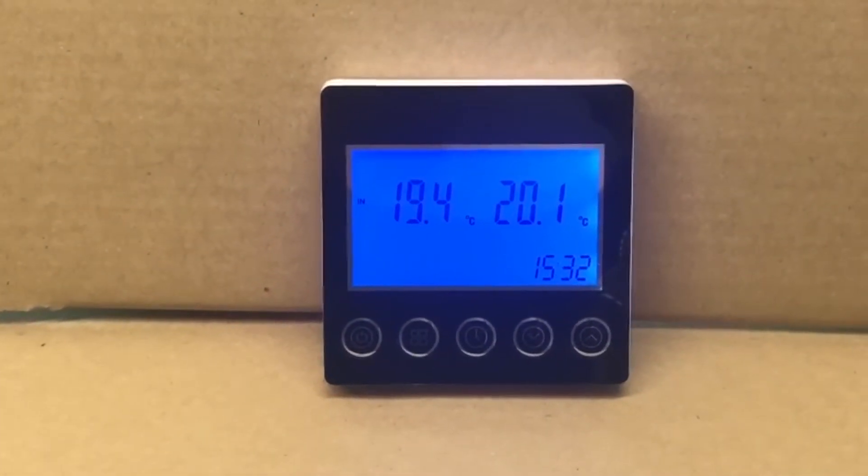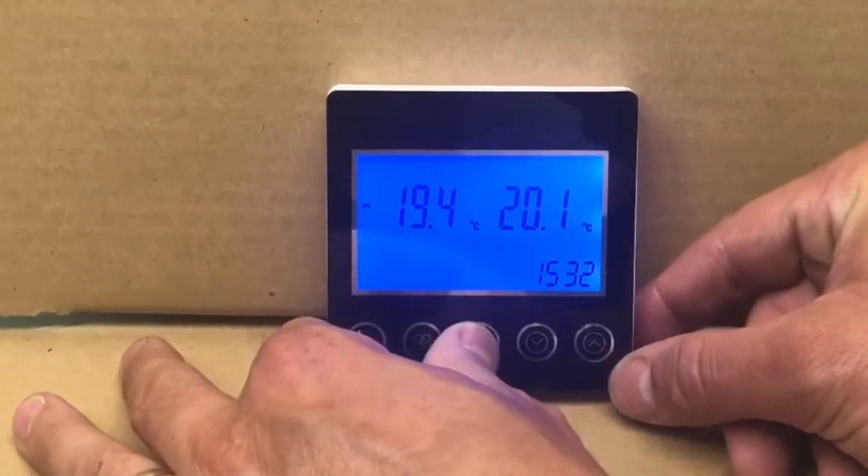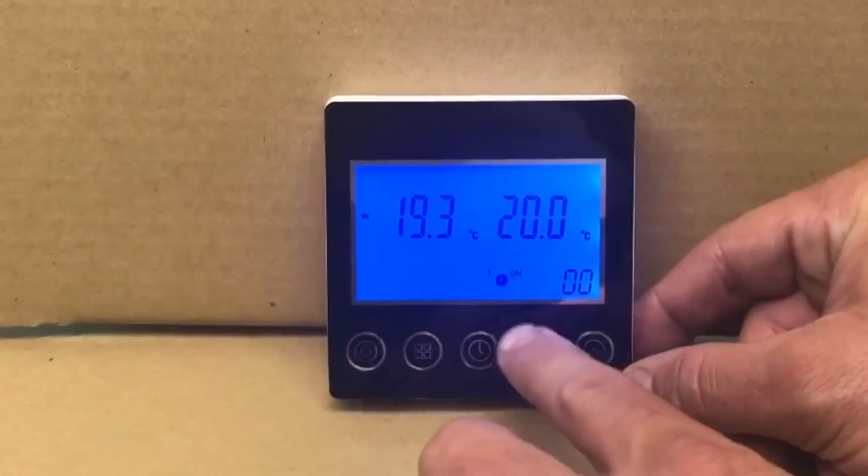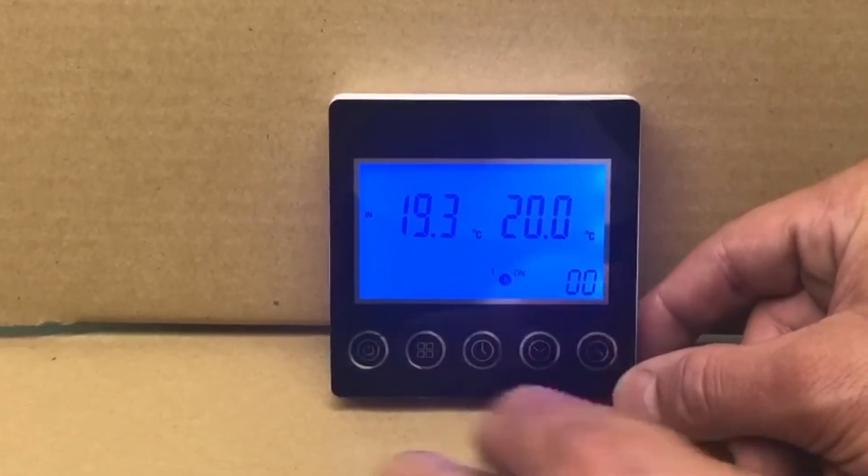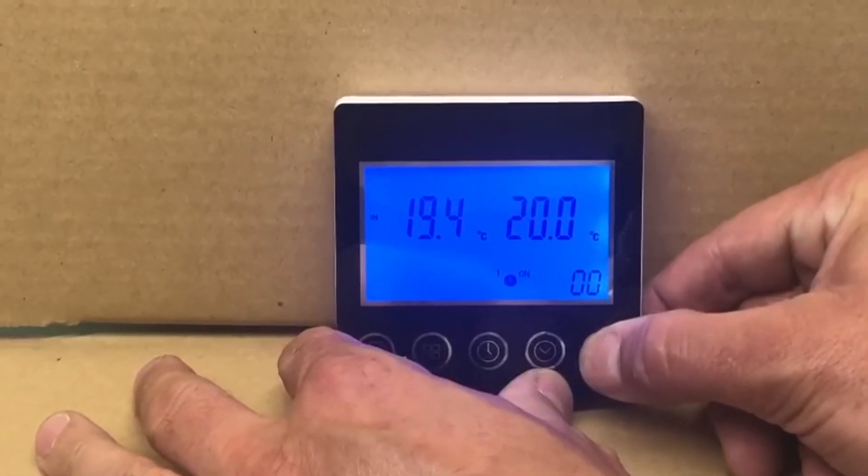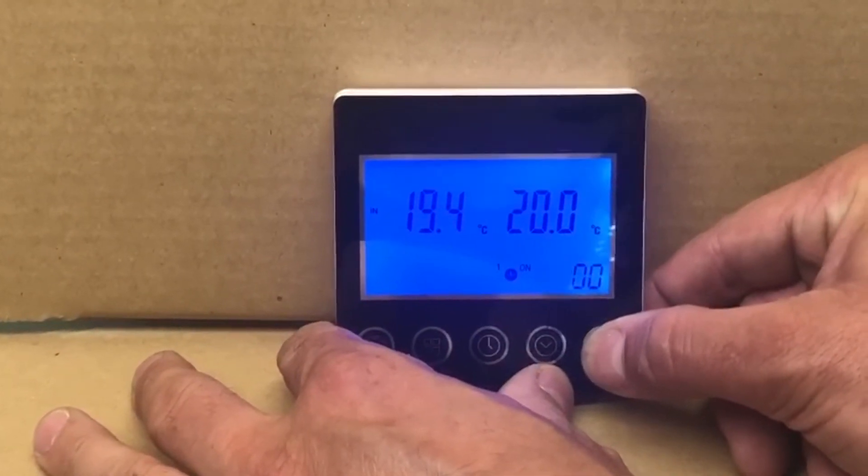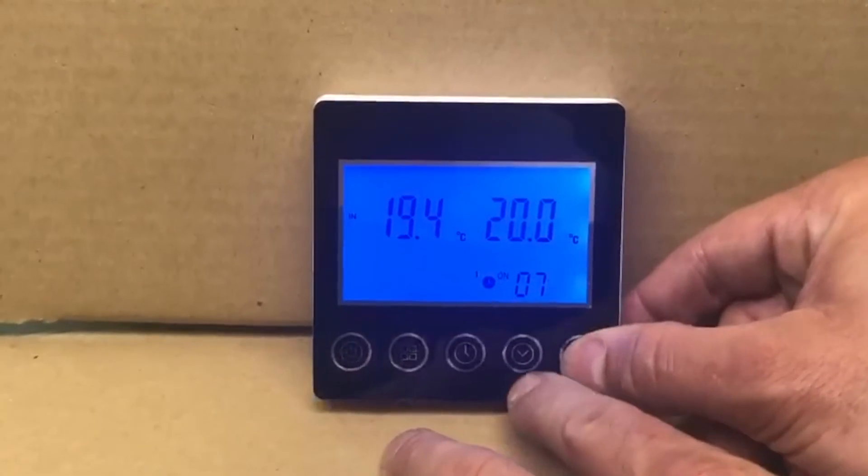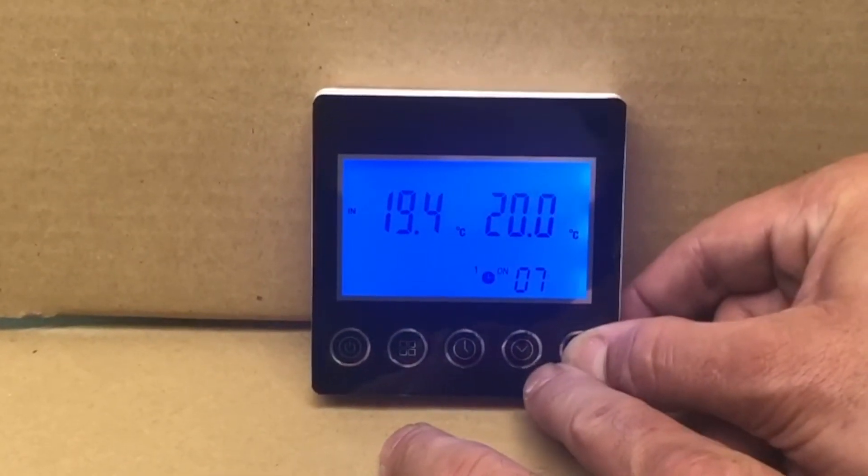If we want to set the timer, we press and hold the timer button for three seconds. Then we get the timer on flashing and we set it in the same way. We can say we want it to turn on at seven o'clock in the morning, or 7:15, whichever we want.